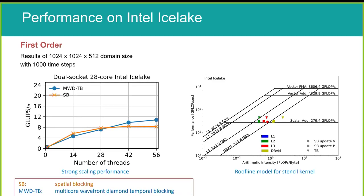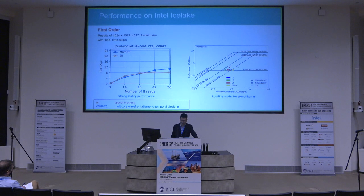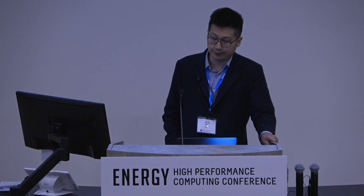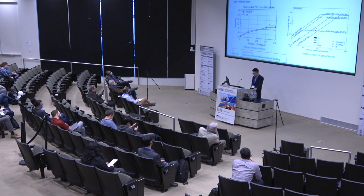For performance results using the first order wave equation formulation on Intel Ice Lake, we use the same test grid and the trends remain the same. As we need to compute the various velocity components for the first order formulation, the implementation requires more data to read and write, so overall performance is slightly lower than the second order formulation since the memory bandwidth is the same. But again, MWTB beats spatial blocking. The temporal blocking kernel shows much higher performance throughput and higher DRAM arithmetic intensity.